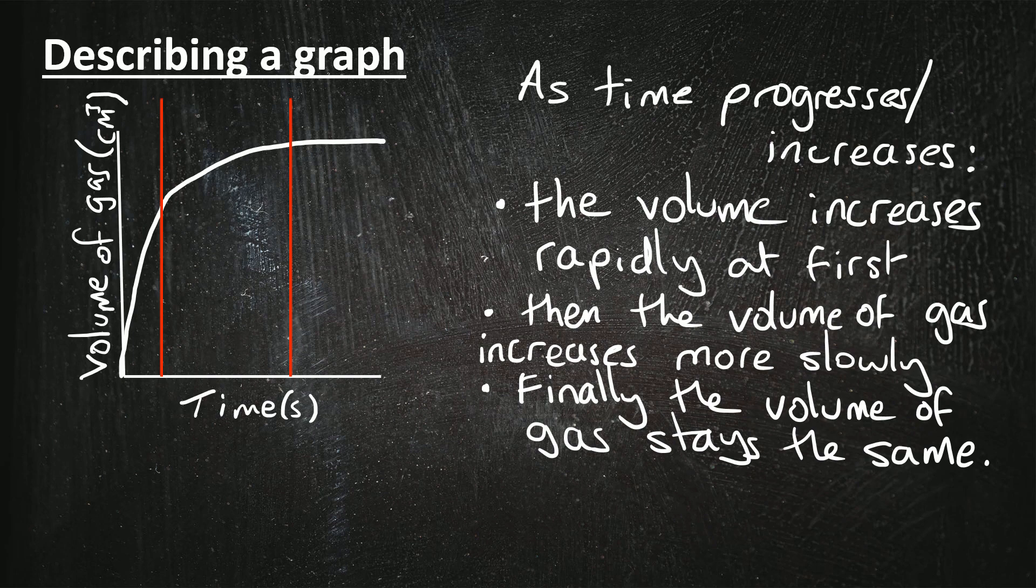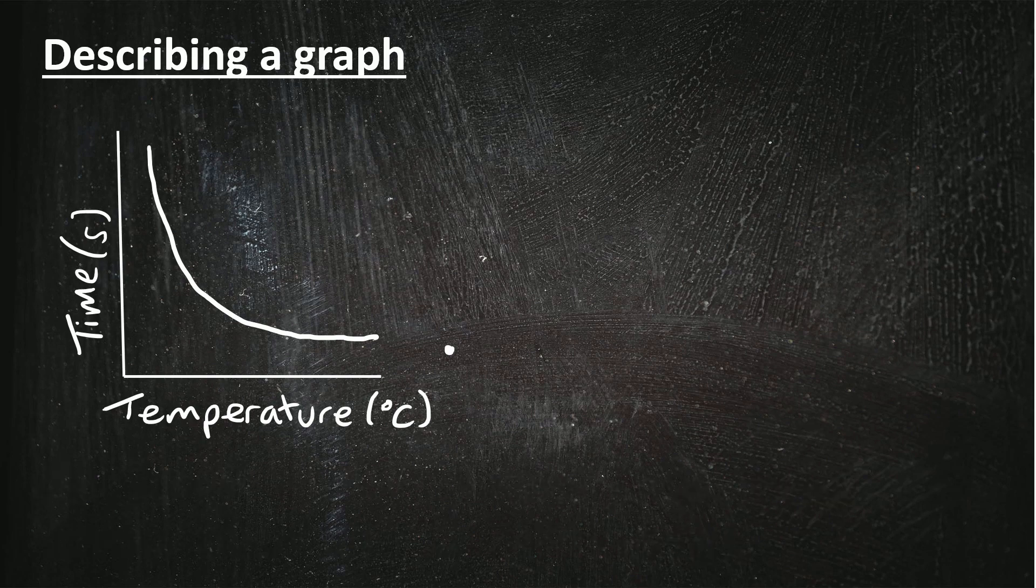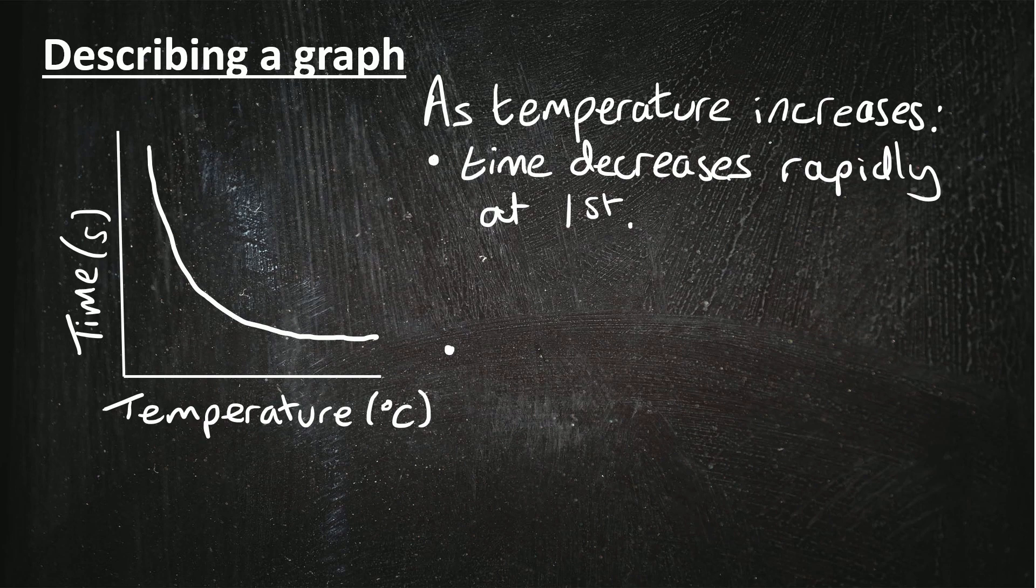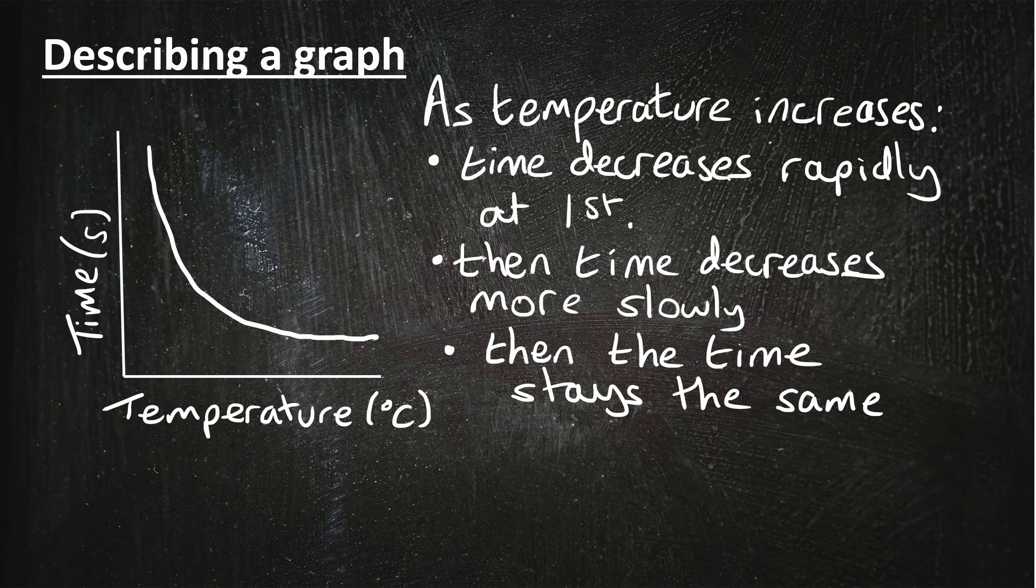Here's another example of describing a graph, this time the graph is downward sloping. So like before, if we just wrote 'as temperature increases, the time taken decreases', that would only get us one mark. So we need to describe it in more detail for the two or three marks. So instead we could say as the temperature increases, the time decreases rapidly at first, then time decreases more slowly, and finally the time stays the same when it reaches a certain point. And it's even better if you can put some numbers on that, so you could say the time stays the same once it reaches a certain temperature, for example.